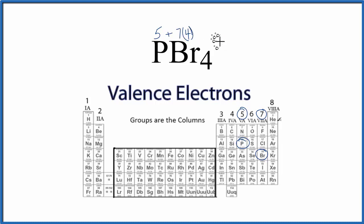And then we have this positive sign. When we see a positive sign, that means we've lost an electron. Electrons are negative, so if you lose an electron, you become positive. We've lost 1 electron. So this is 28, 33, minus 1, equals 32 total valence electrons for the PBr4+ Lewis structure.